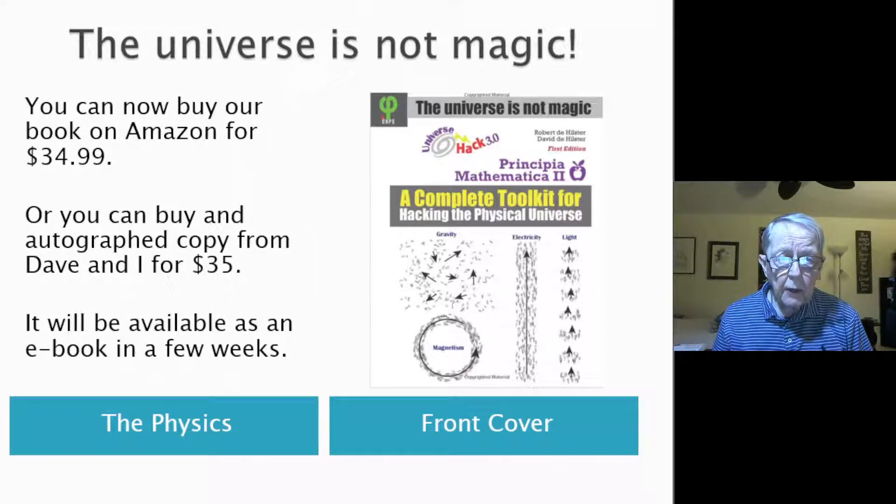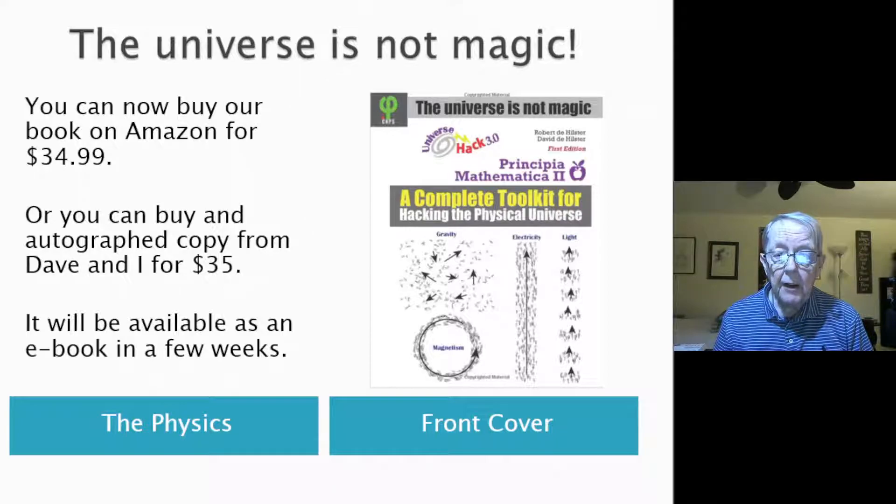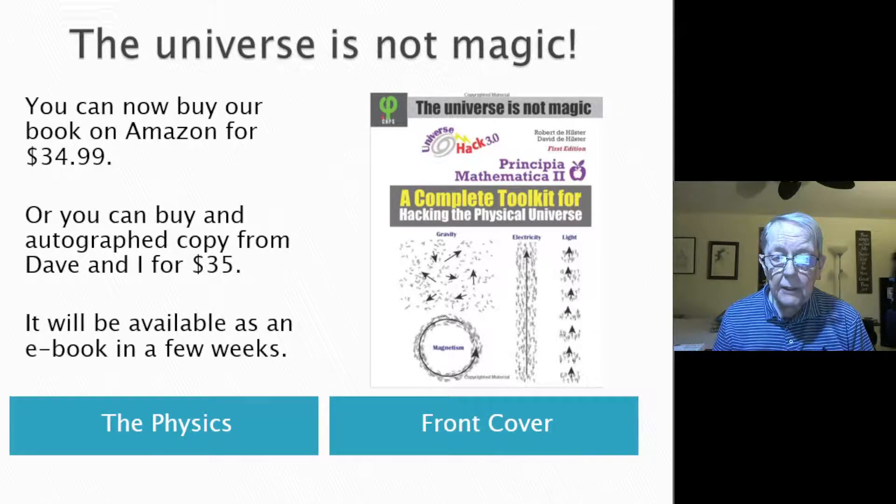You can buy our book on Amazon for $34.99, or you can buy an autographed copy from Dave and I for $35. And it will be available as an e-book in a few weeks.